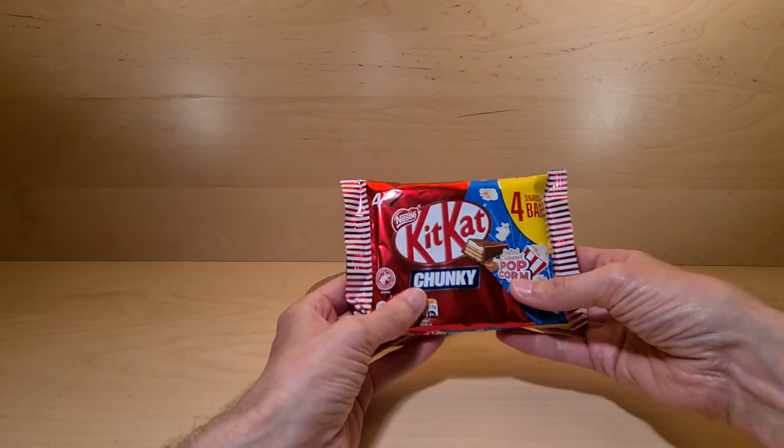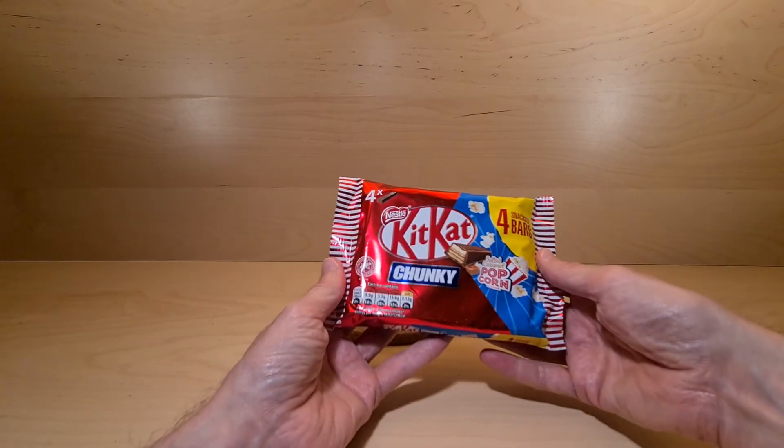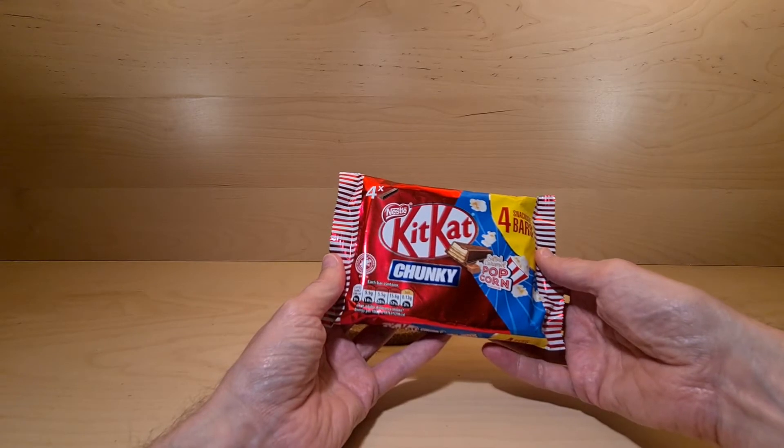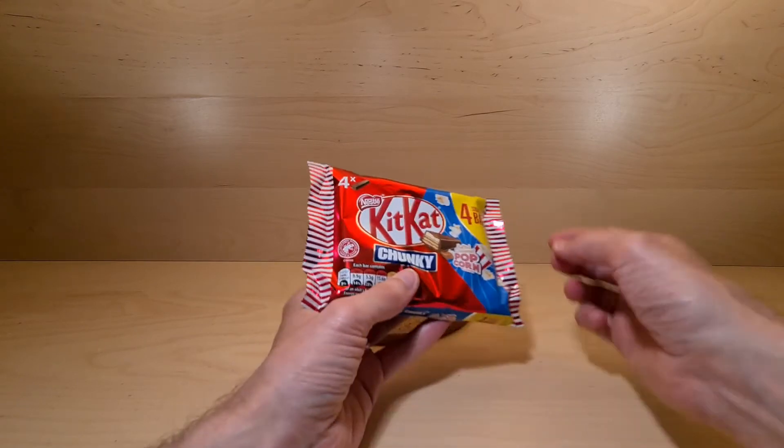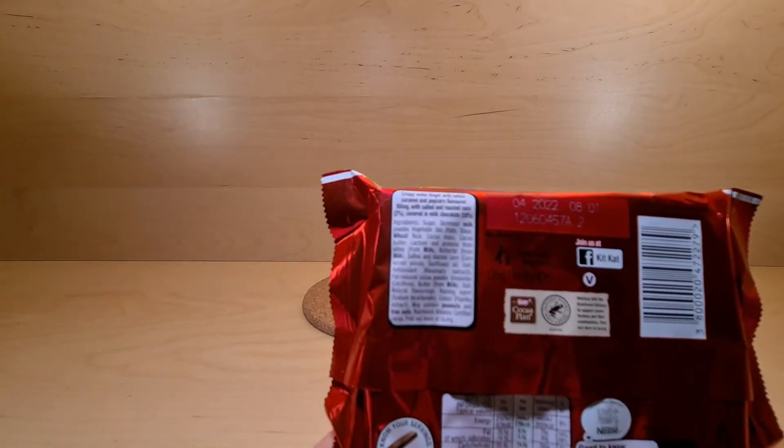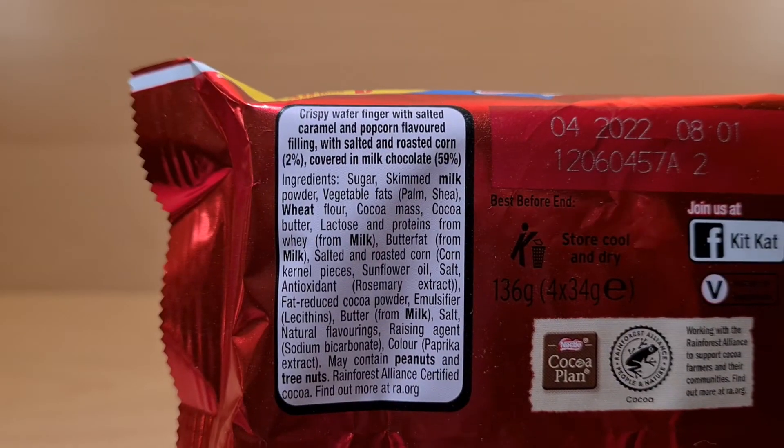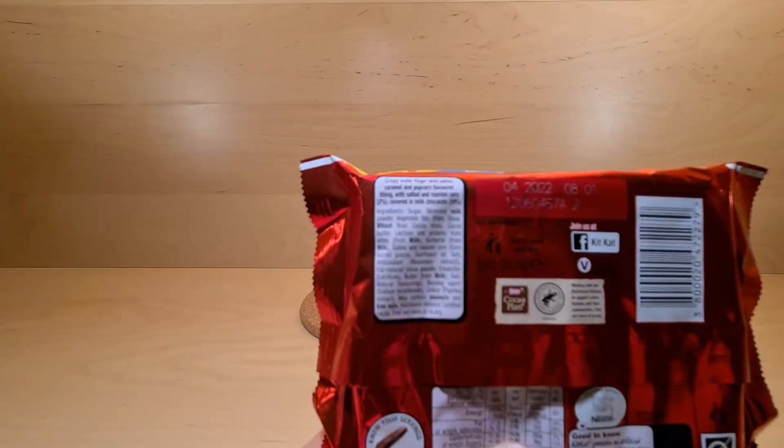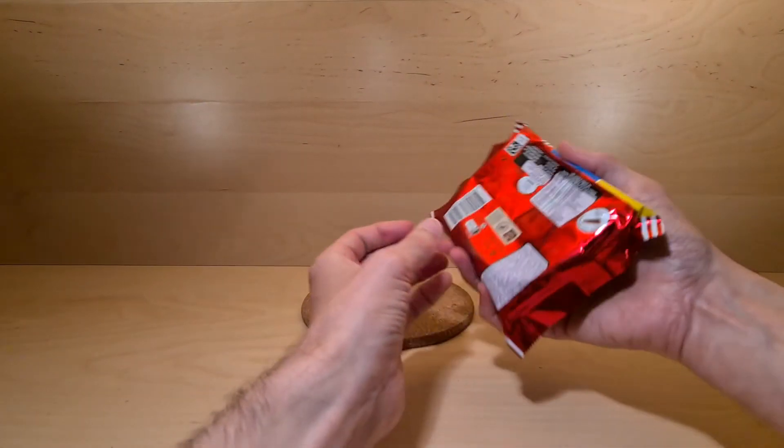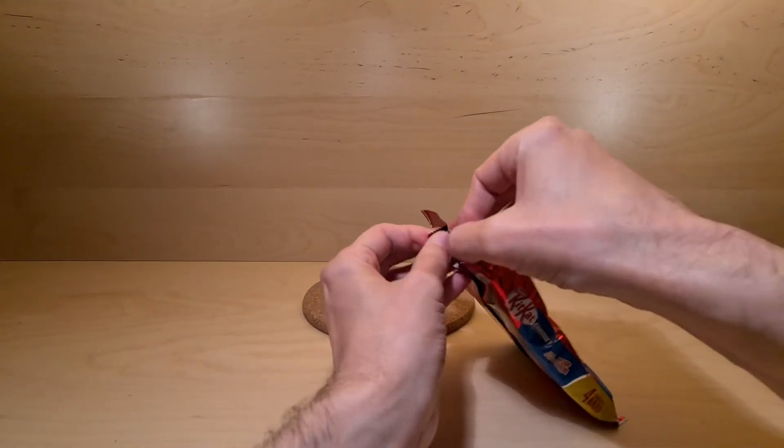This was picked up in Poundland. If you need to know what's in the ingredients, I will zoom in momentarily and then zoom away because you can pause. We need to crack this open and have a discussion about Kit Kats.